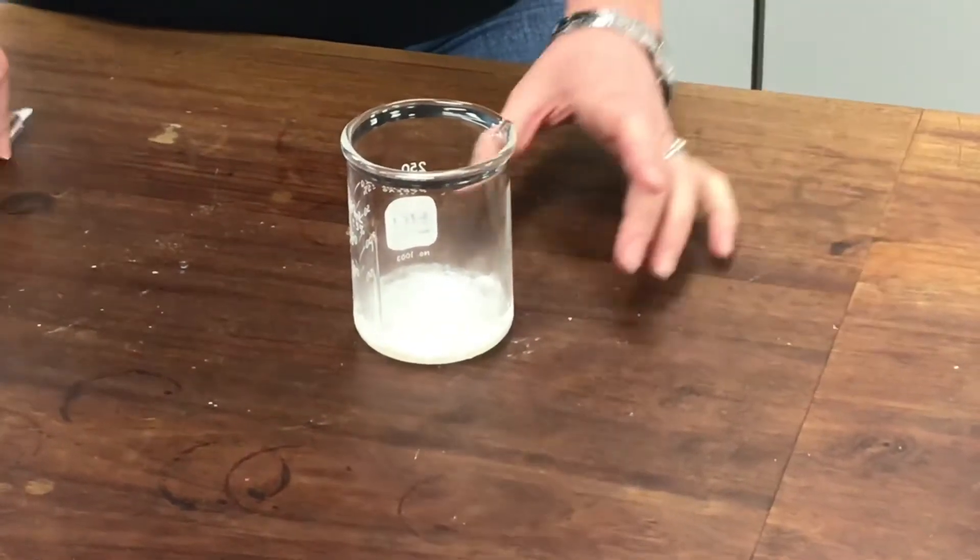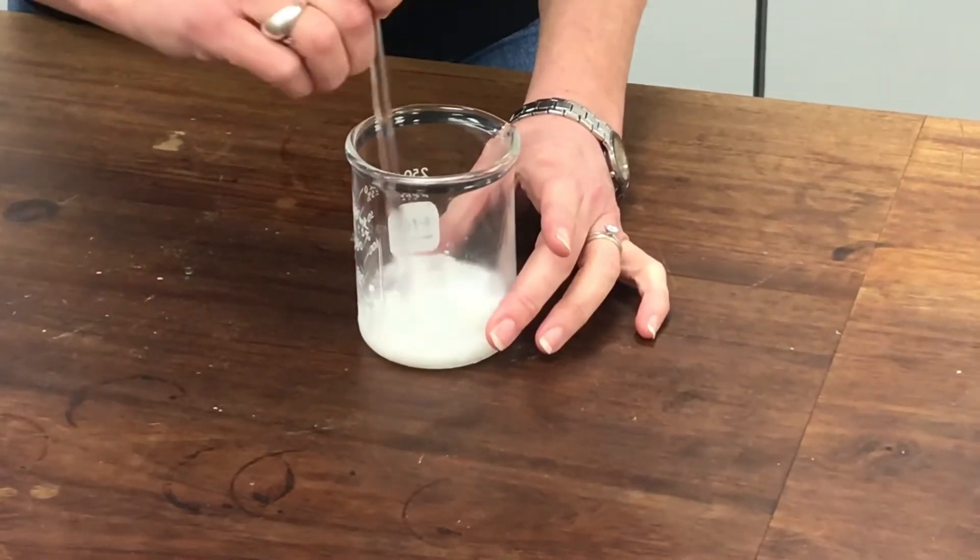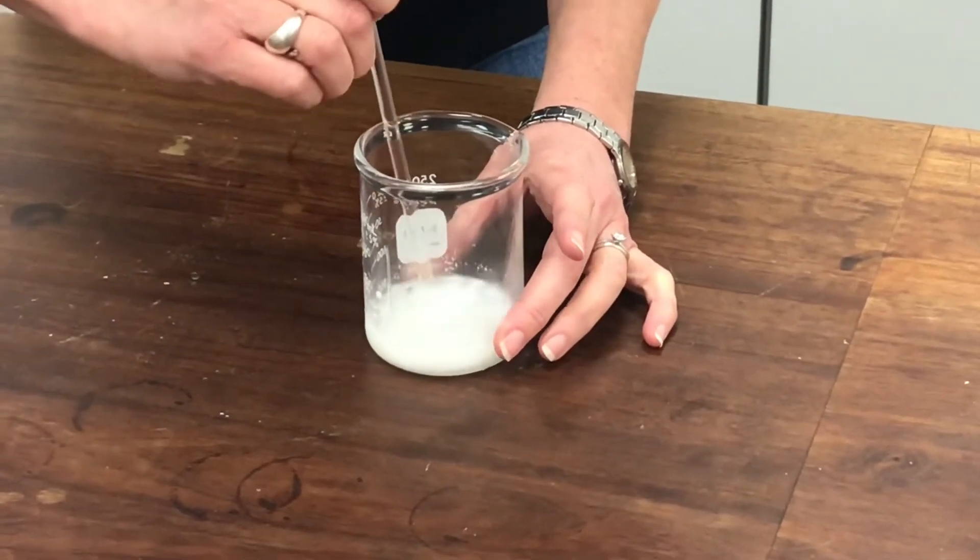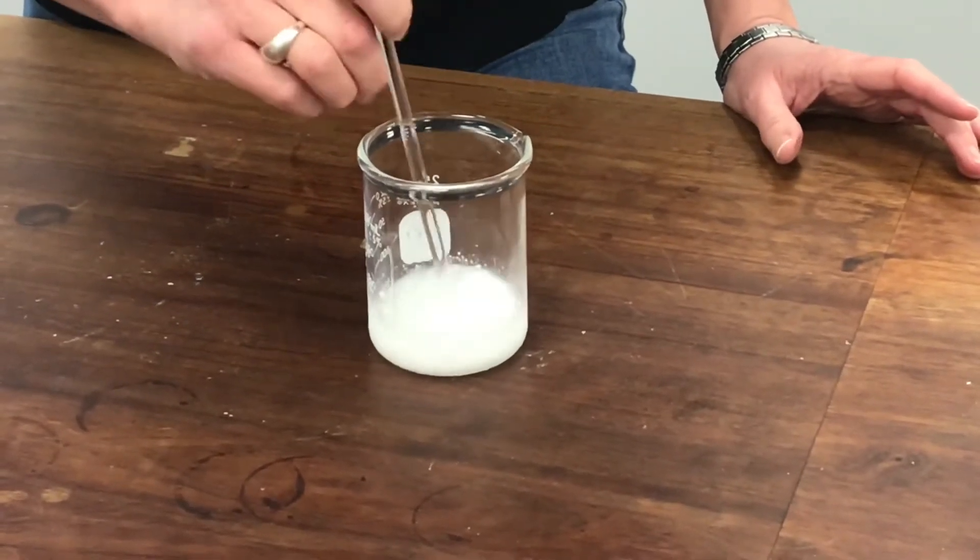I've got to stir this now until all that crushed ice has melted. And hopefully I should have a nice amount of crystalline nitrated methyl benzoate, which I'll be able to recrystallize. So I'll join you again in a minute.